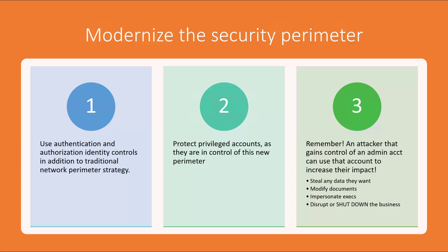When we go to modernize that security perimeter, we want to look at modernizing it with an identity-first approach. Using authentication and authorization allows us to basically extend the security posture of that traditional network perimeter. Being able to protect the privileged accounts that have access to all these different systems is now in control of this new perimeter based on identity. If an attacker gains control of one of these admin accounts, they can use that account to increase the effectiveness of their attack.